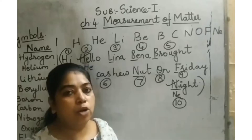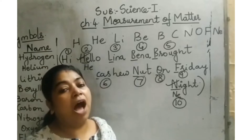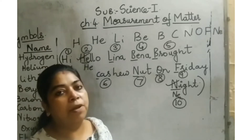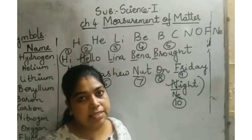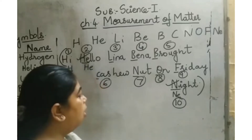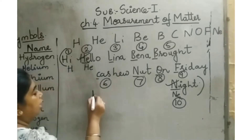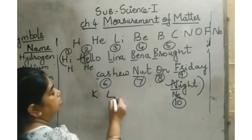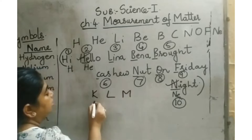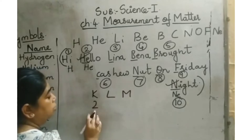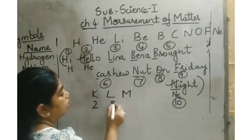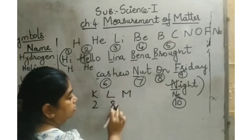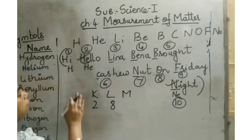In Bohr's theory, he said that in an atom, if the outermost orbit has 8 electrons, then the given element is stable. According to K-shell, L-shell, and M-shell: in the K-shell there should be only 2 electrons, in the L-shell there should be at least 8 electrons, and then we continue.